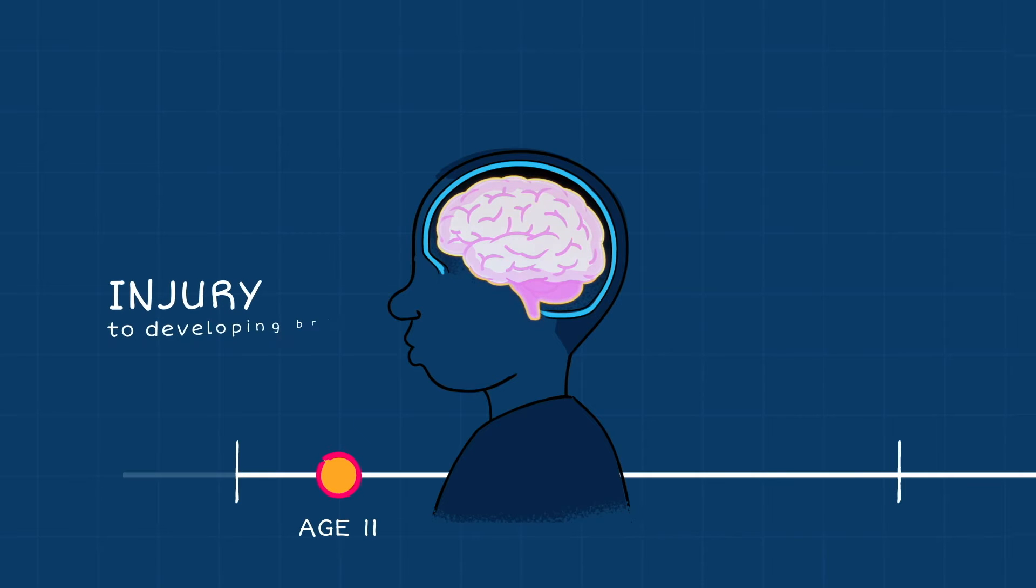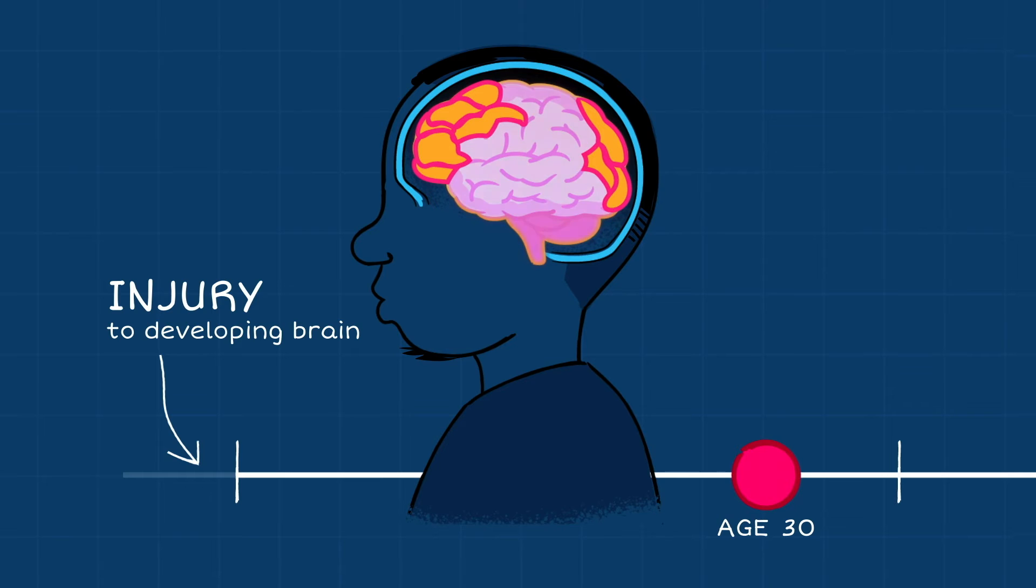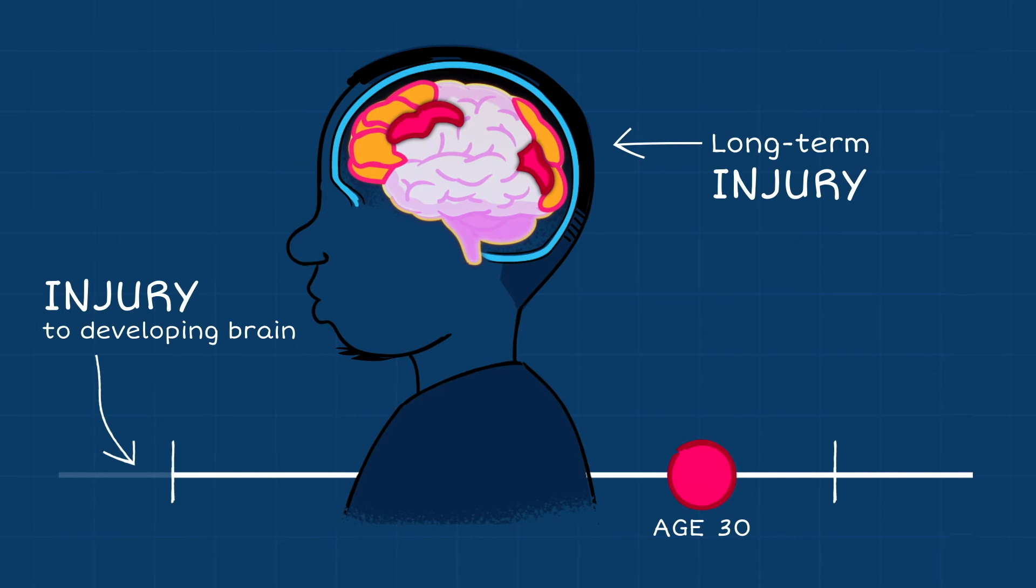Children's brains and bodies are still growing, and an injury to their developing brains may put them at risk for more serious injury or long-term developmental problems. The brain of the illustrated boy reappears along a timeline. An arrow pointing to the timeline reads, Injury to developing brain.